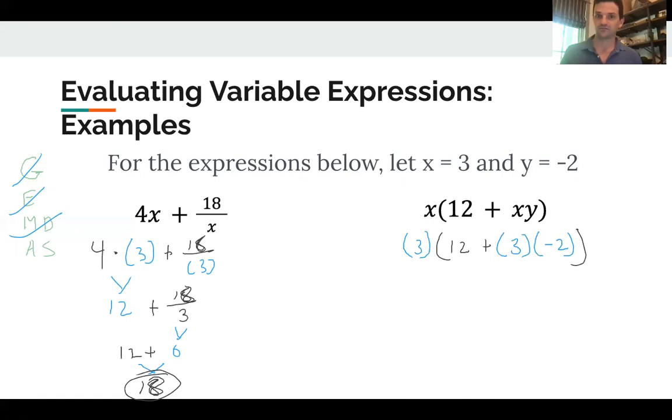So going back again to our order of operations: grouping symbols, exponents, multiply and divide, add and subtract. Are there any grouping symbols in this problem? Well, yes. In this case, there are. There's a set of parentheses with a bunch of math inside of it. We need to go inside that set of parentheses and start over. So what's inside there? We've got the 12 plus 3 times negative 2.